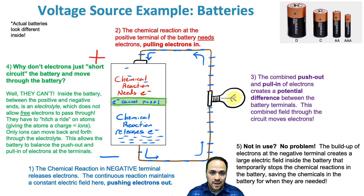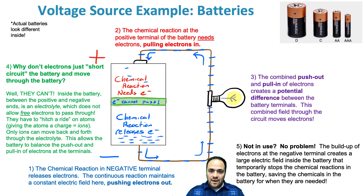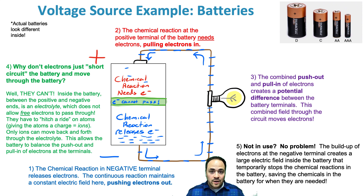Batteries are very interesting and complex, but basically what's happening inside is multiple chemical reactions. At the negative end of a battery, a chemical reaction releases electrons, so electrons build up there. At the positive end, another reaction absorbs electrons. This creates a push of electrons at the negative end — they're bunching together and want to repel — and a pull for electrons at the positive end. This combined push-and-pull effect gives us our voltage and is what drives current through a closed circuit.